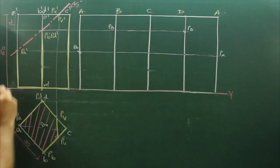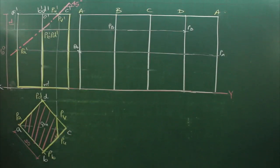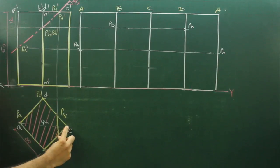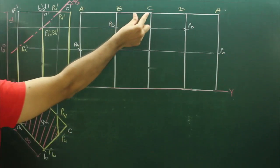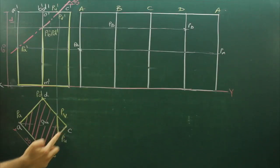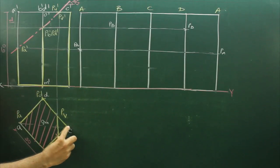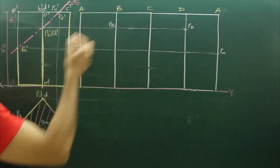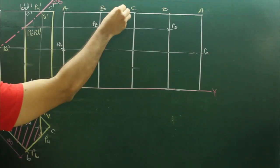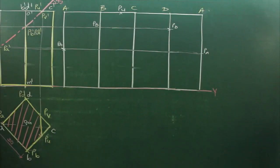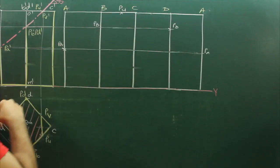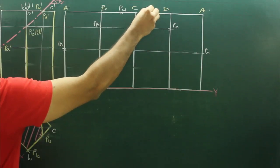Now PU dash and PV dash. Now this point you can't project from front view, so that time we will go from top view. What we will do? We will take C to PU in our compass and from C you cut on this side. It is between B and C, this point PU. Take C to PU in your compass and from C you cut on this side. That is PV.